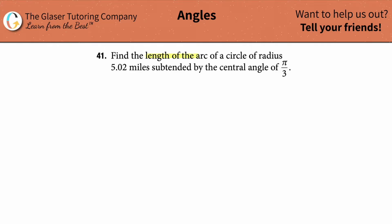Number 41, find the length of the arc of a circle of radius 5.02 miles subtended by the central angle of π over 3.